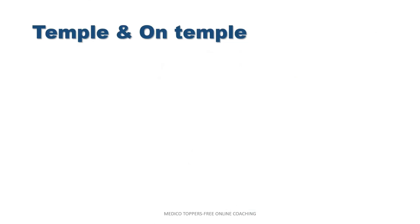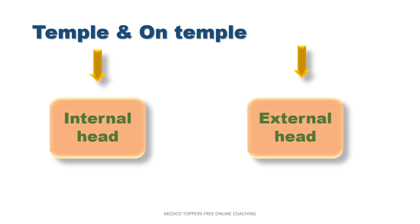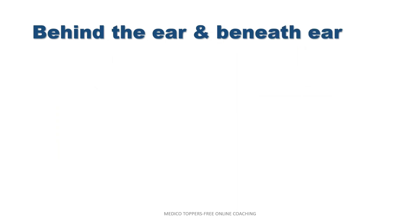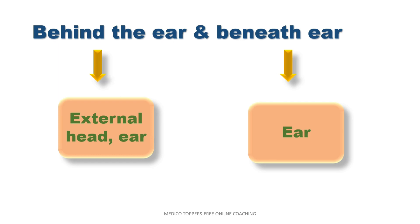First: temple and on temple. Temporal lobe is situated inside the skull, so it is a part of the brain and is given under internal head. But on temple is in external head. Next, behind the ear and beneath the ear — behind the ear is given under external head, but beneath the ear is only given under the ear chapter.